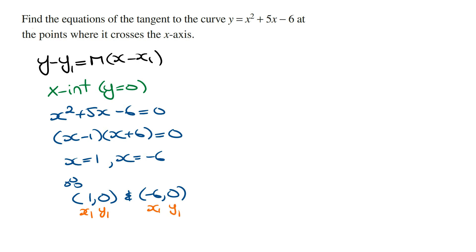And now we need to work out the value of m, in other words the gradient of the tangent line for each of these points. To do this we find dy/dx and then evaluate when x equals 1 and when x equals minus 6. And so dy/dx is going to be 2x plus 5.